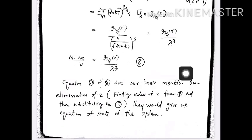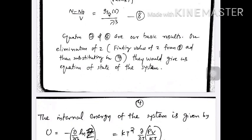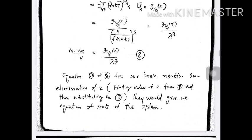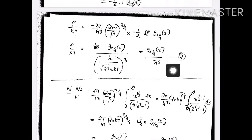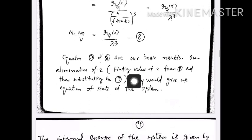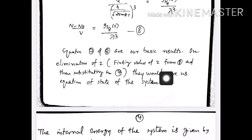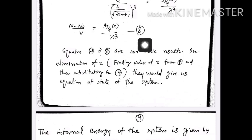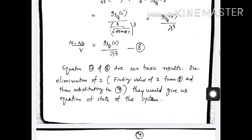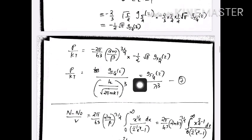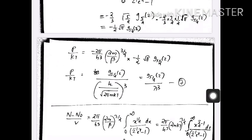From these equations we can obtain the equation of state of the system. We find the value of z from equation 8, and then substituting this into equation 7, we will get the equation of state.